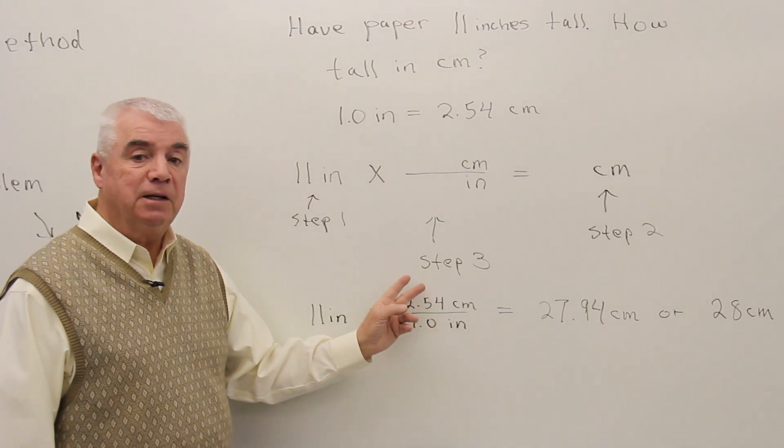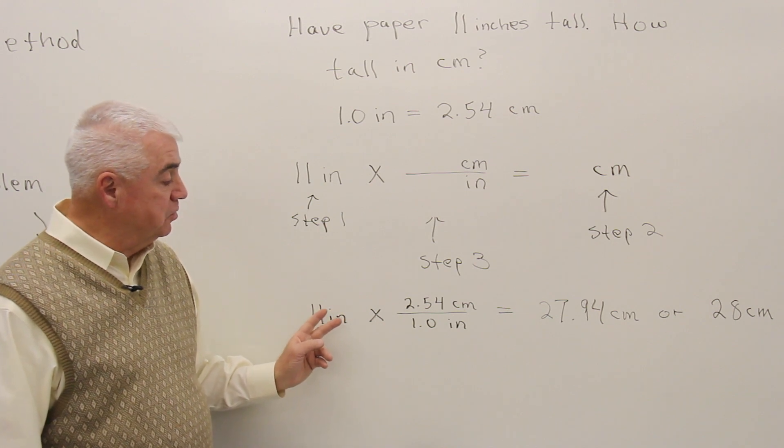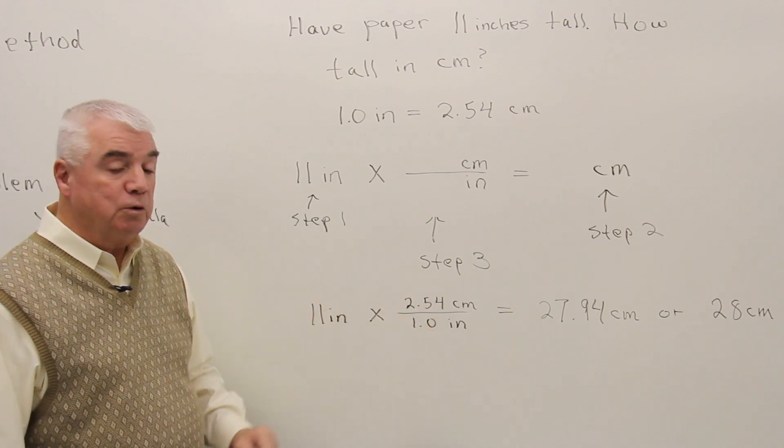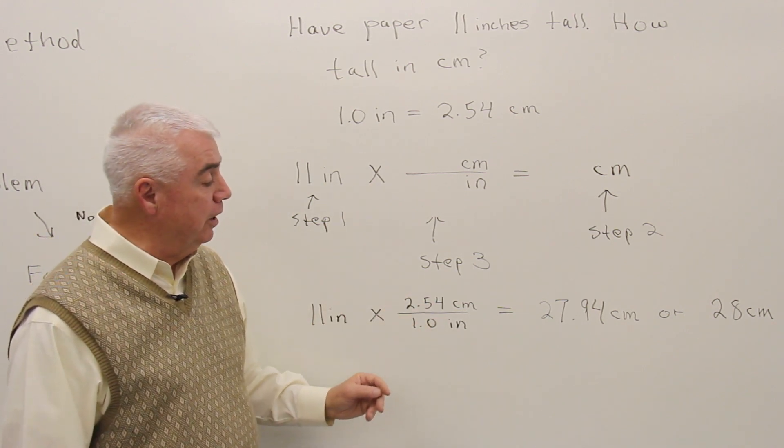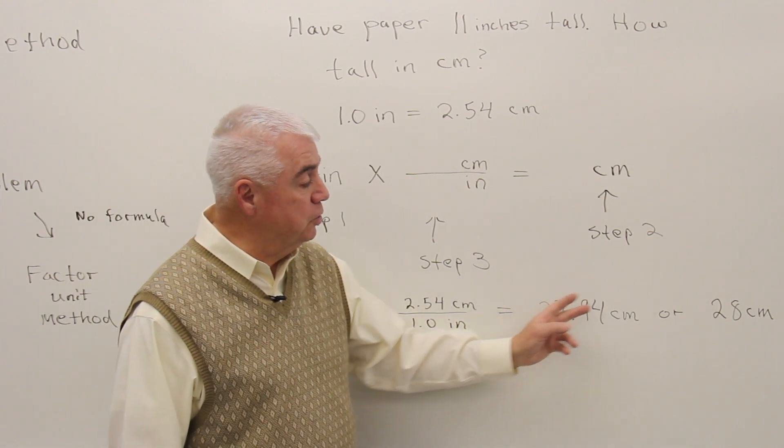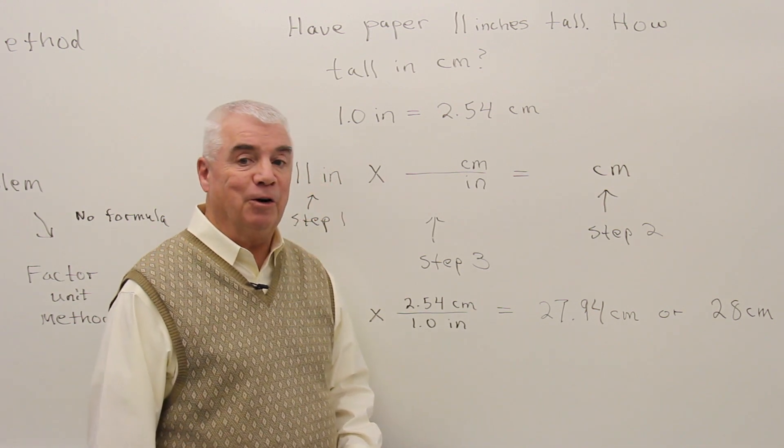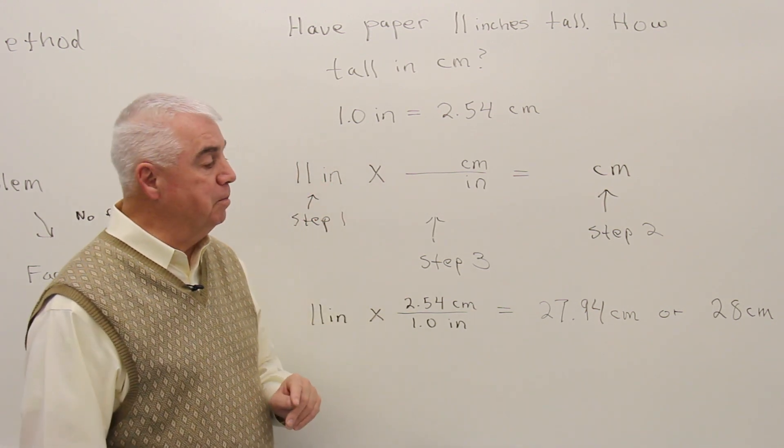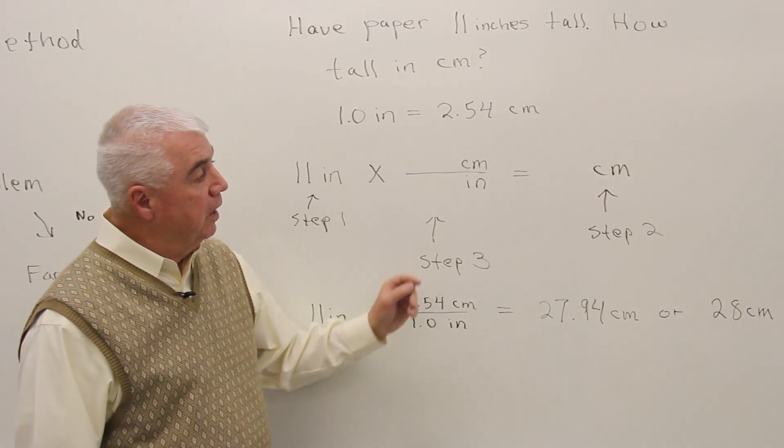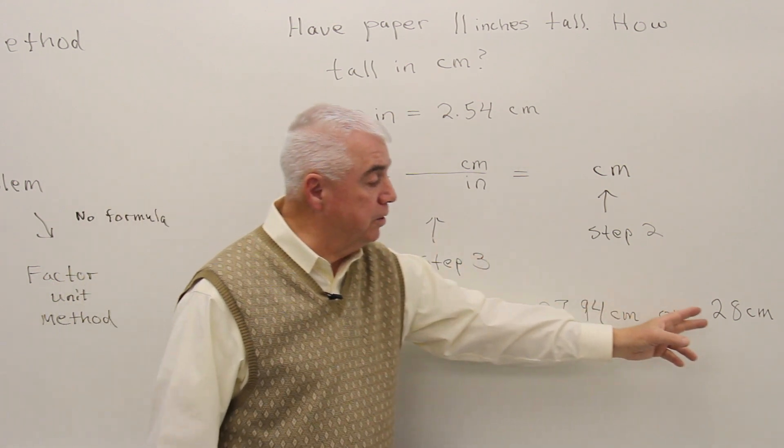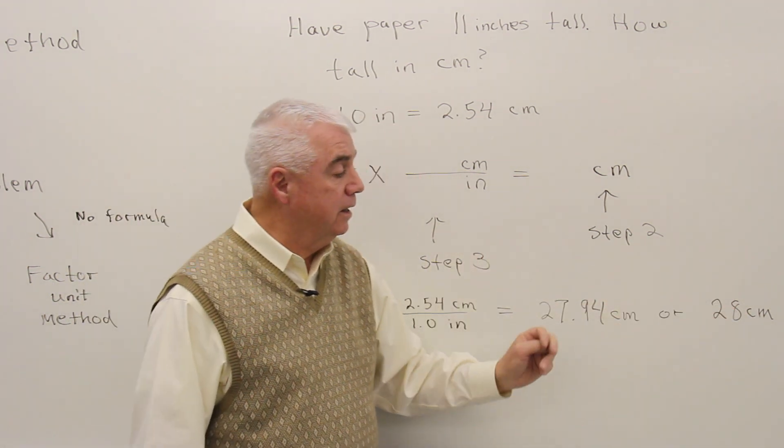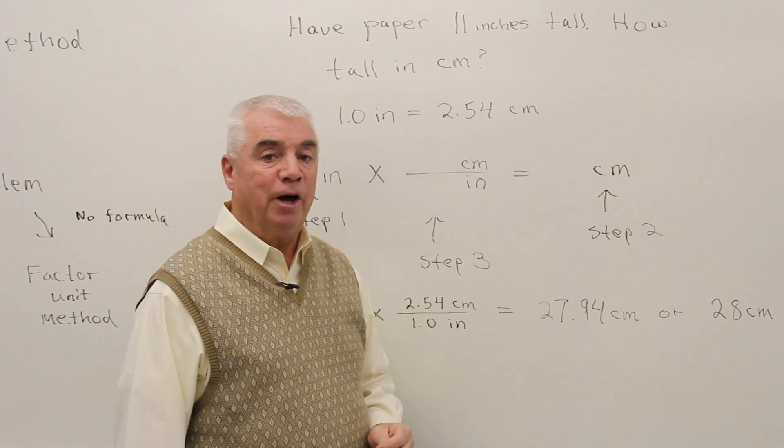And we have to keep in mind significant figures. We've got two significant figures over here in a couple of places. So we'd round this off to two significant figures, 28 centimeters. The strength of this method is that by setting it up so that the unit comes out right, the number should come out right also.